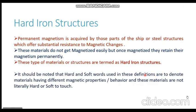It should be very clear that the words 'hard' and 'soft' in hard iron structures and soft iron structures denote two different types of magnetic properties or magnetic behavior — they are not literally hard or soft to touch. These iron structures are equally hard or soft to touch physically. A soft iron structure is not soft to touch. The terms simply denote their magnetic properties or magnetic behavior.